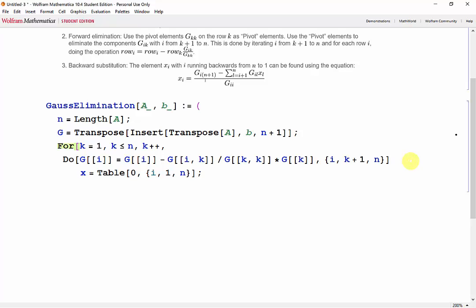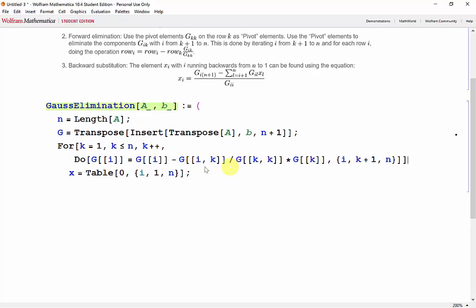But first, let's remember to close this for loop. And now that we have an empty vector set up, we can use a for loop with an increment that goes backwards from N all the way back to 1 to do our backward substitution.